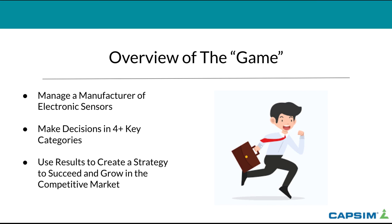This simulation is fun — it takes a little bit to learn and there are a lot of small rules, but you are an executive managing your own company. You make decisions in four key categories — research and development, marketing, production, and finance — and use results to create a strategy to succeed and grow in the competitive market. If you put effort in early in the semester, you will be able to implement the strategy tools you're learning in class and truly enjoy this game. My name is Brandon Griffin and this has been a brief overview of CAPSIM. Thank you.